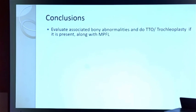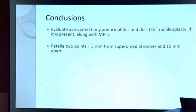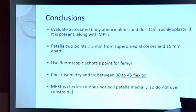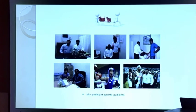To conclude: always look for bony abnormality and combine with TTO and trochleoplasty when indicated. Mark the two points on the patella and the isometric point on the femur. Check isometry and fix accordingly. MPFL acts as a checkrein — do not over-constrain. Thank you.